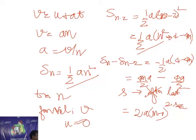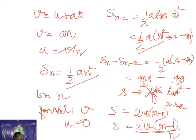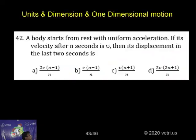So the distance covered in the last two seconds is 2a(n minus 1). Substituting a equals v divided by n, we get 2 times v times (n minus 1) divided by n. The final answer is s equals 2v(n minus 1) divided by n.